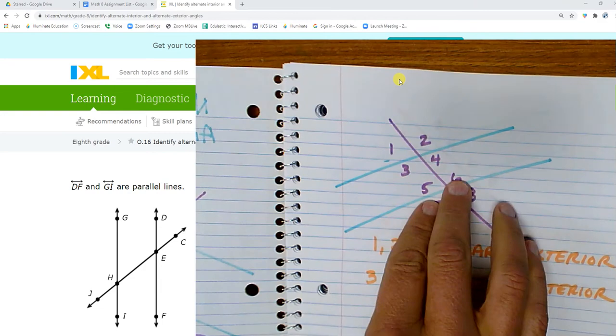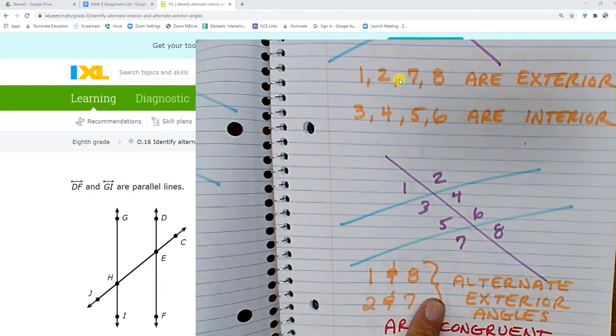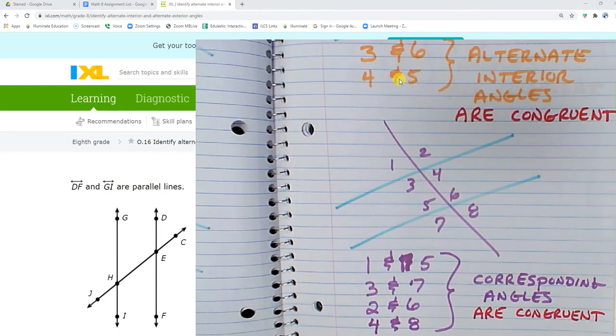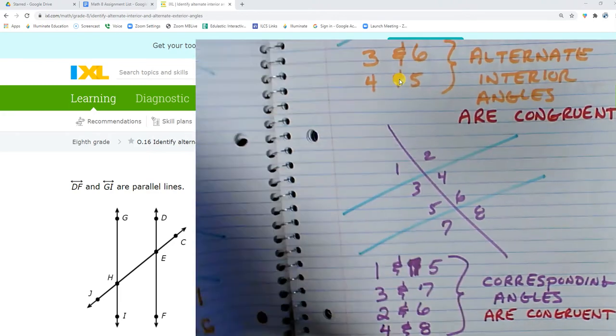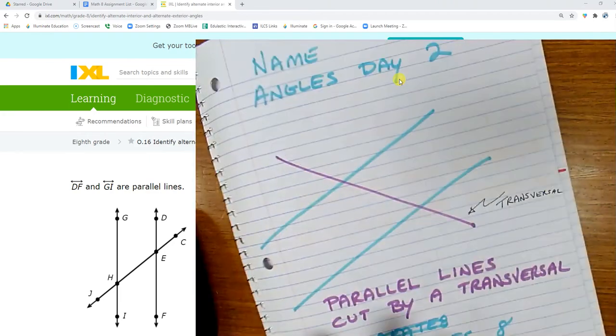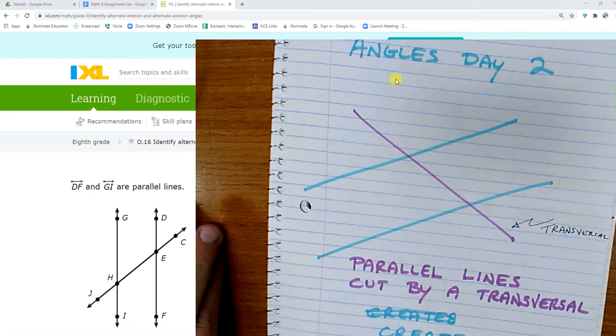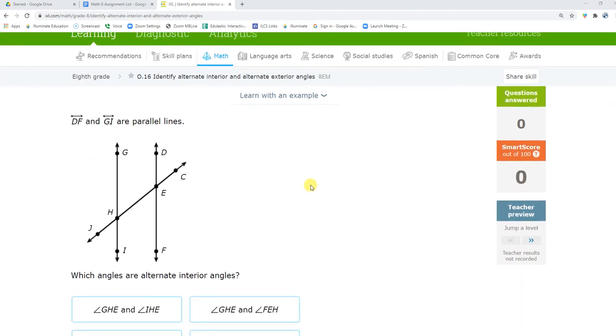The idea of parallel lines and a transversal, the idea of interior and exterior angles, alternate interior angles, alternate exterior angles, corresponding angles. The notes, maybe I'll link it up in the video description, the notes that go with this.